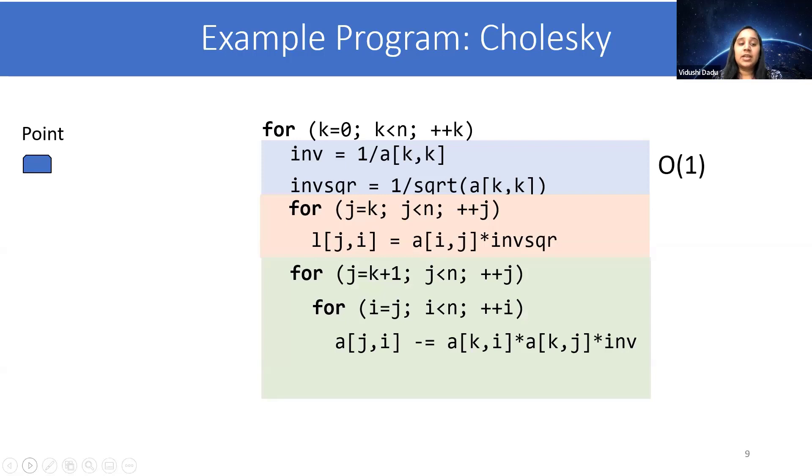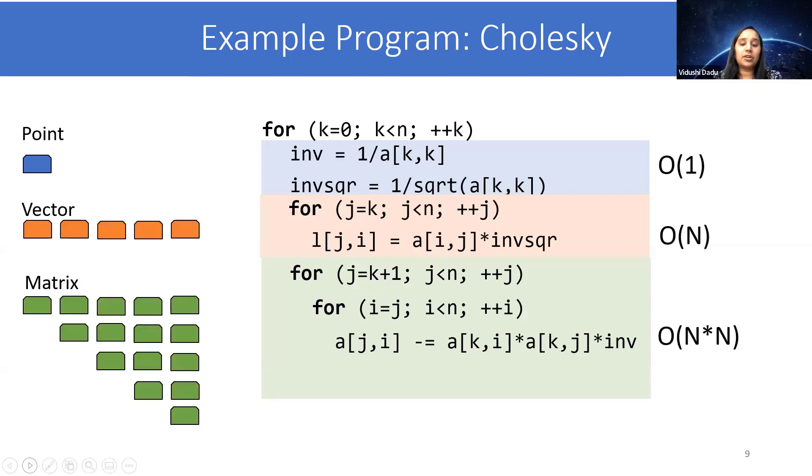So starting with computations, here there are three kinds of computations. One is scalar computation, which we call point, then the computation on a vector, and then on a matrix. As these computations have different computation complexity, Cholesky has heterogeneous tasks.